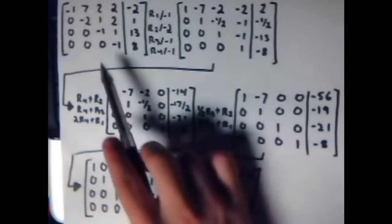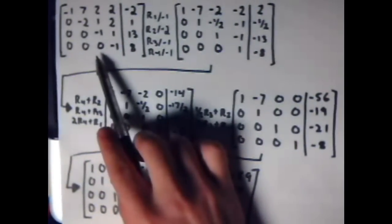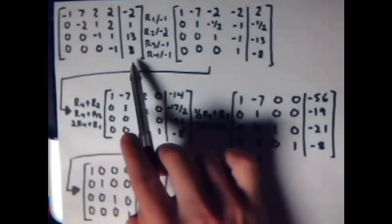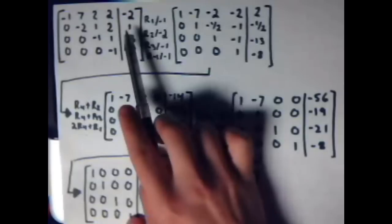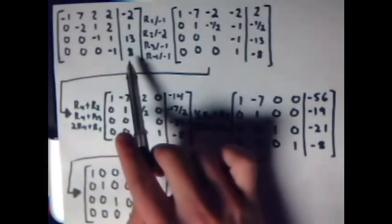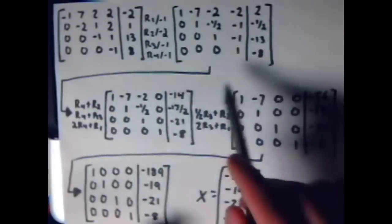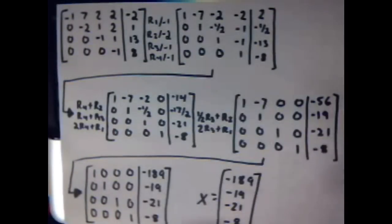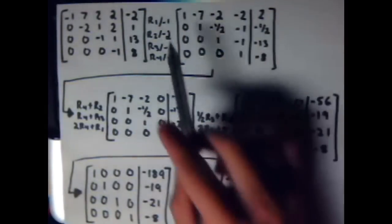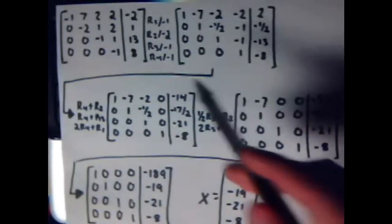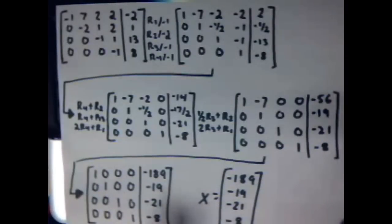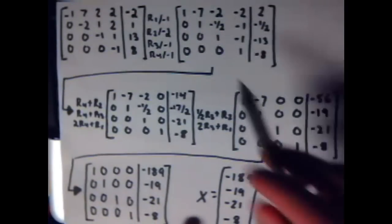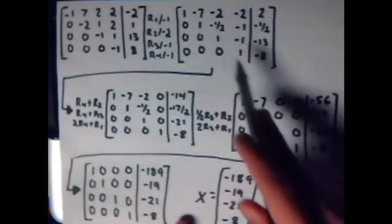Here, we have a U, augmented with the y value that we just got. It's the same numbers, negative 2, 1, 13, 8. And first, I just simplified it to make all these in the diagonal 1 to make our math a lot easier. So I just did row 1 divided by negative 1, row 2 divided by negative 2, row 3 divided by negative 1, row 4 divided by negative 1. And that's going to influence all those.